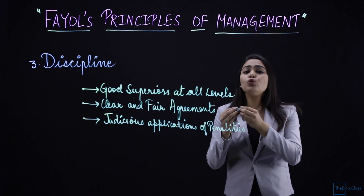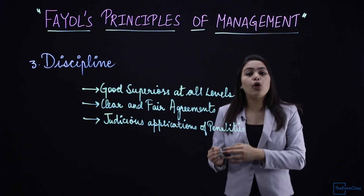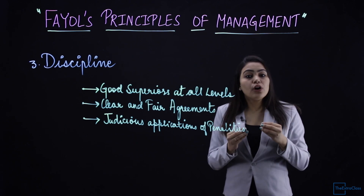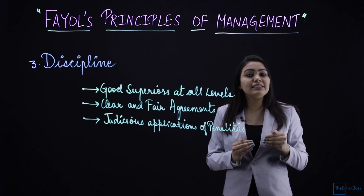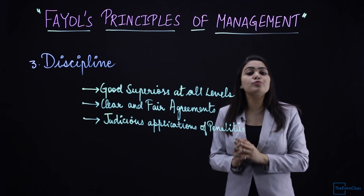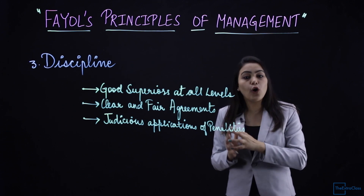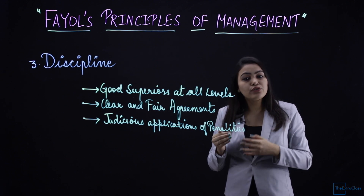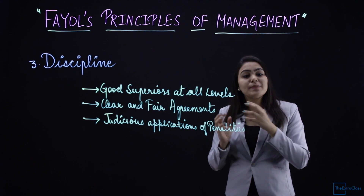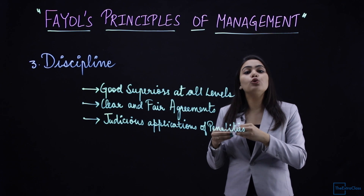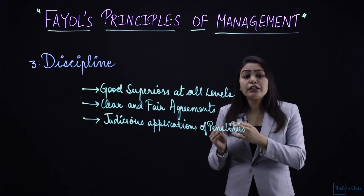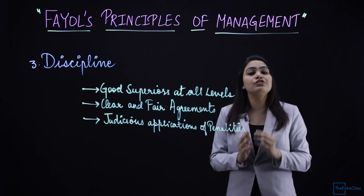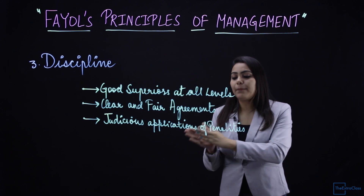According to Henry Fayol, discipline requires: good supervisors at all levels, clear and fair agreements, and judicious application of penalties. Regarding good supervisors — in school there are prefects, head boy, head girl, teachers, and heads of departments who ensure discipline is maintained. Similarly, in an organization, superiors ensure a peaceful and disciplined environment. Regarding clear and fair agreements — when an individual is recruited, there is an agreement that clearly specifies working hours, working days per week, and monthly leave entitlements. These terms and conditions must be clear and fair between the superior and the subordinate.